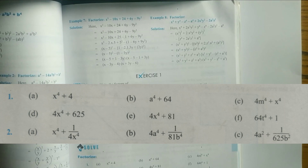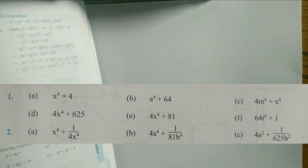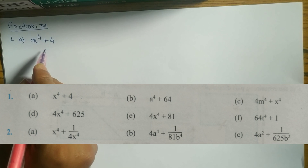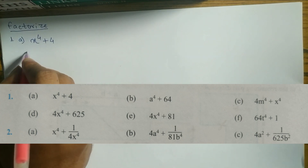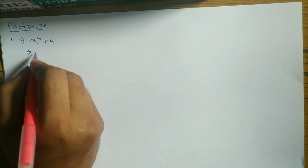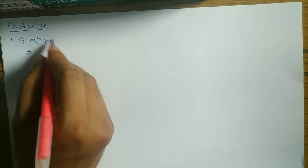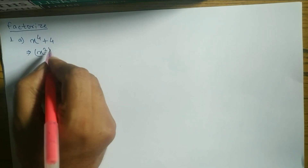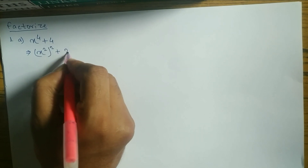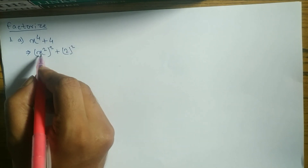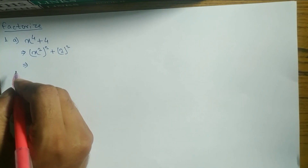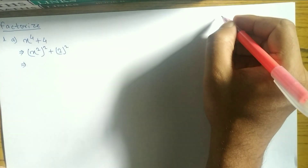Keep watching till the last. Question number 1a: the question is x⁴ + 4. We have to factorize this. We need to convert it into the form of a² + b², so we can write (x²)² + (2)². Now we have to use the formula for a² + b².